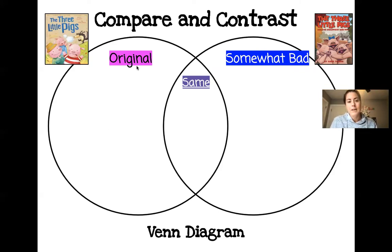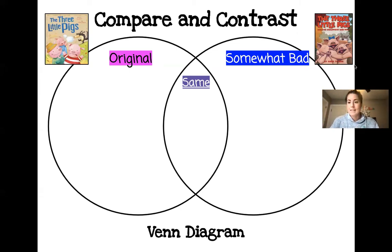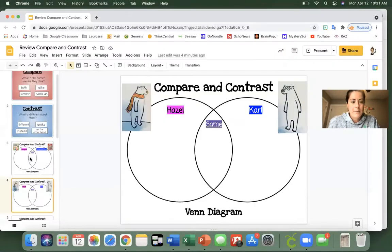So for a Venn diagram — see where that pink word is, 'the original'? That would be about the Three Little Pigs. The blue word, 'the somewhat bad,' would be what's different with the Somewhat Bad Wolf, and in the middle where it's the same — in purple — it's what both stories have in common. What's the same about both stories? All right, so now I'm going to read our story.